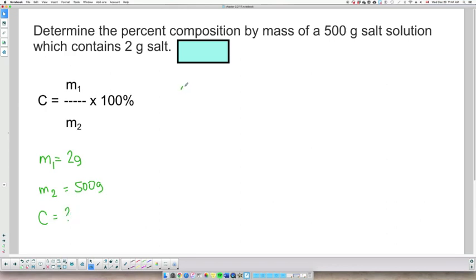So if I replace in my equation, I'm going to have 2 grams over 500 grams times 100%, because we want to transform this ratio into a percentage, and we will get 0.4%.